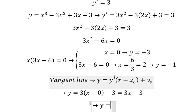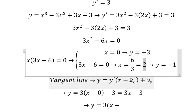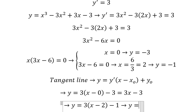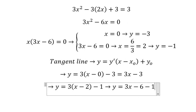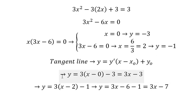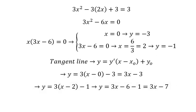For the second solution, the first derivative of y is also 3. Substituting x₀ equals 2 and y₀ equals negative 1 into the tangent line formula gives 3x minus 6 minus 1, so we get y equals 3x minus 7. This is the final answer. Thank you for watching.